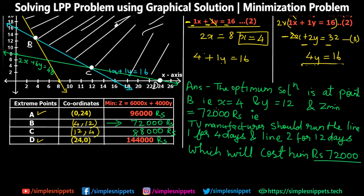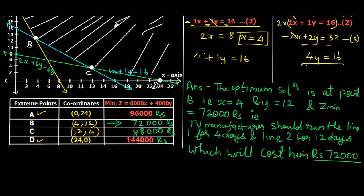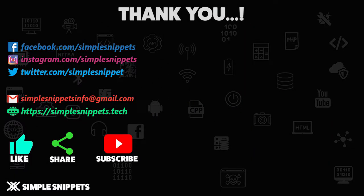This means the TV manufacturer should run line 1 for 4 days and line 2 for 12 days, costing a minimum of rupees 72,000 to meet the requirements of 24 color TVs, 16 standard TVs, and 48 economy TVs. This was the entire minimization problem using the graphical solution for LPP. If you liked this video please give it a thumbs up, share it, and subscribe for more educational content. Thanks for watching!